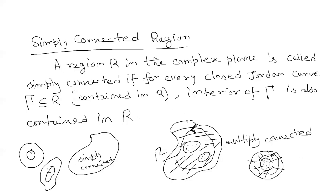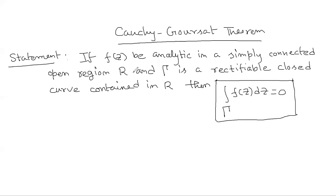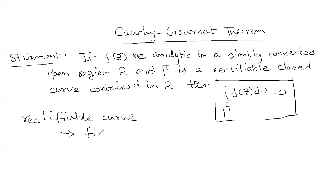I hope you can now identify a simply connected region. In a simply connected region, if you take a rectifiable closed curve — rectifiable means a curve of finite length — and you want to integrate f(z) dz along this curve, the result is zero.